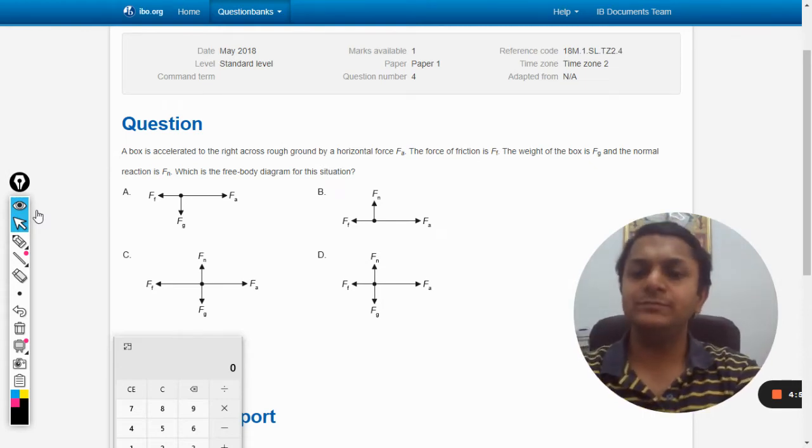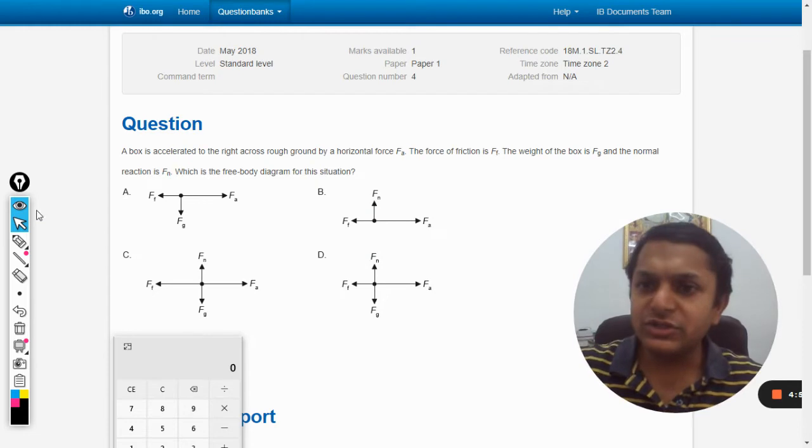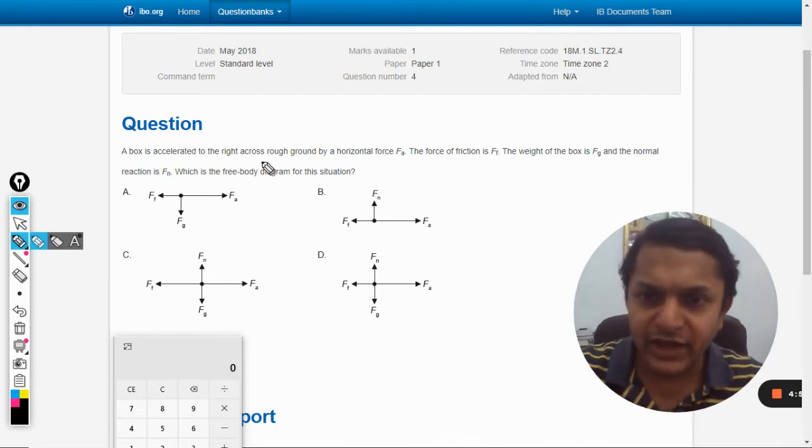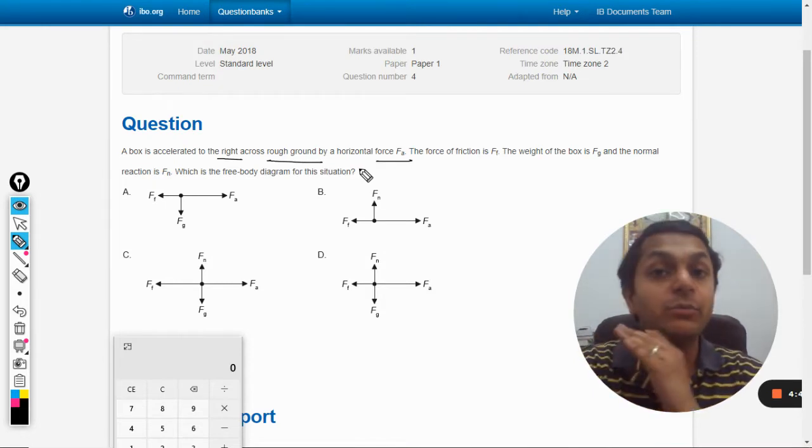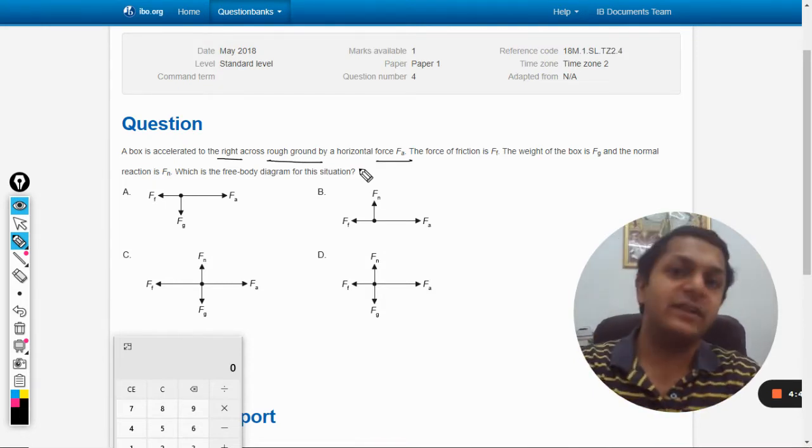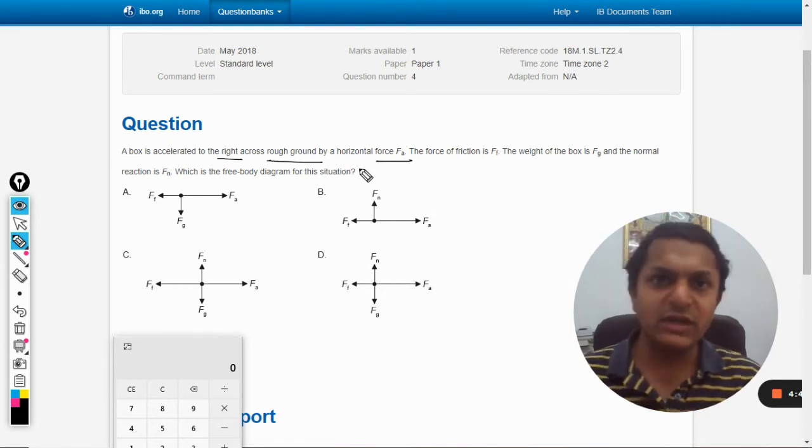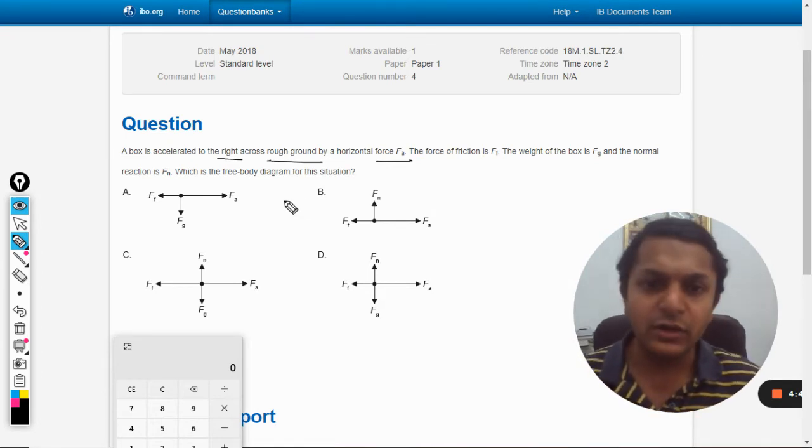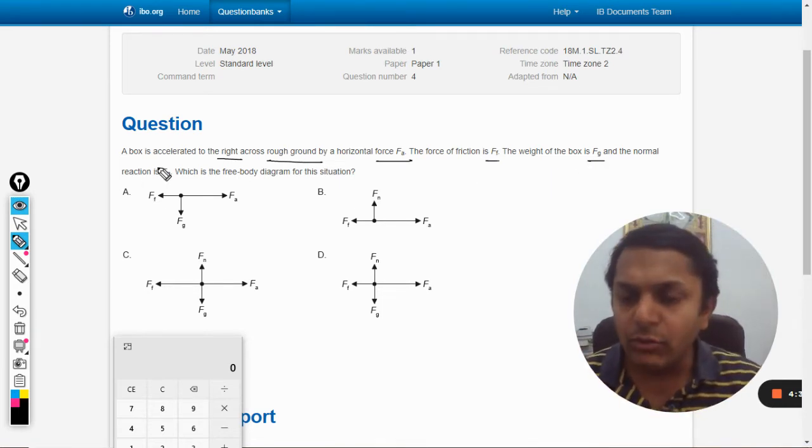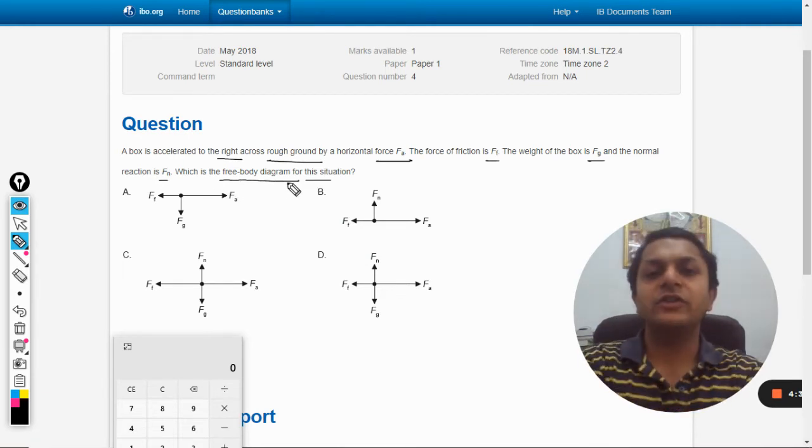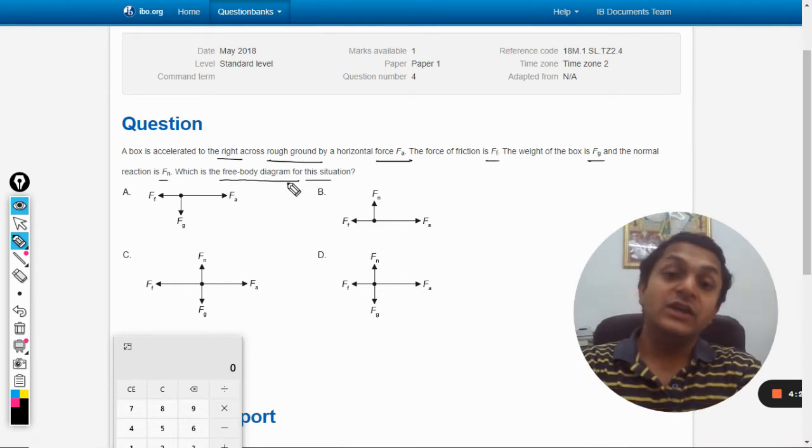Okay dear students, in this question a box is accelerated to the right across rough ground by horizontal force Fa. It is given that the body is getting accelerated, so there has to be a net force. The applied force should be the biggest of all. The force of friction is Ff and the weight of the box is Fg. The normal reaction is Fn. Which is the free body diagram for this situation?